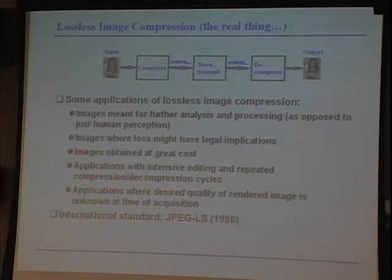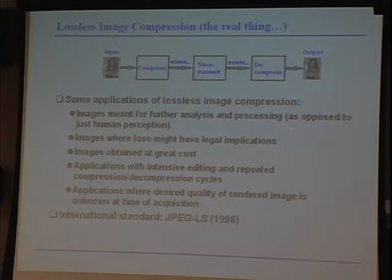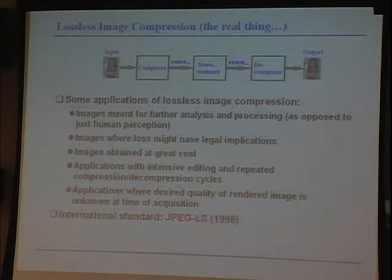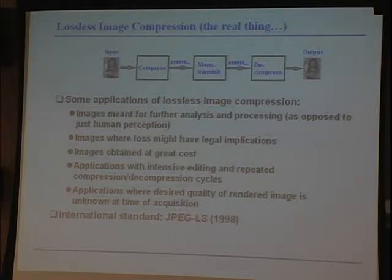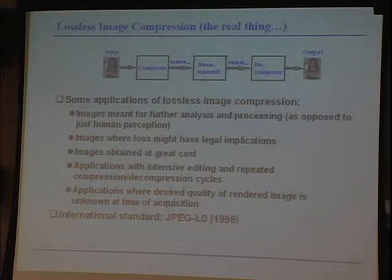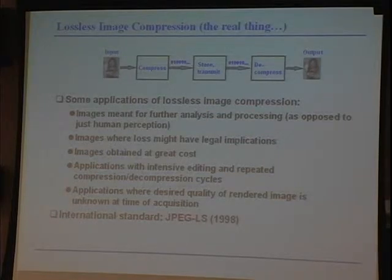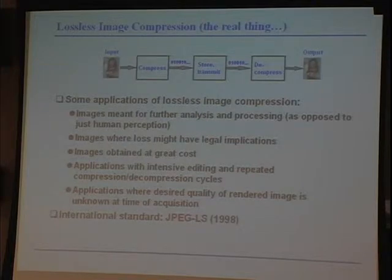Now let's get to image compression. Some applications of lossless image compression: images meant for further analysis and processing rather than just human perception, such as medical imaging and deep space communication; images where loss might have legal implications, again medical imaging; images obtained at great cost, for example from a Mars rover where you don't want to lose data. Most image compression you see in JPEGs is lossy — you don't recover your data exactly. Here we're talking about lossless compression, where after decoding you get back your data exactly. Also relevant for applications with intensive editing and repeated compression cycles, since repeated lossy compression destroys the data.